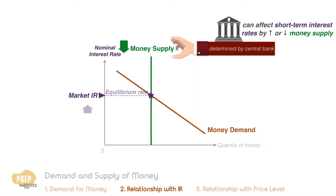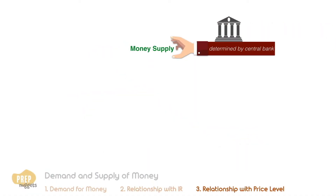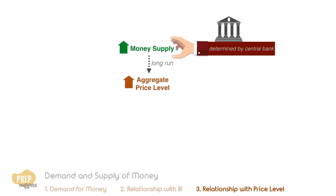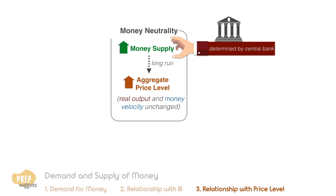Some economists believe that in the long run, an increase in the supply of money will result in an increase in the aggregate price level, while real output and money velocity remains unchanged. This belief is referred to as money neutrality.